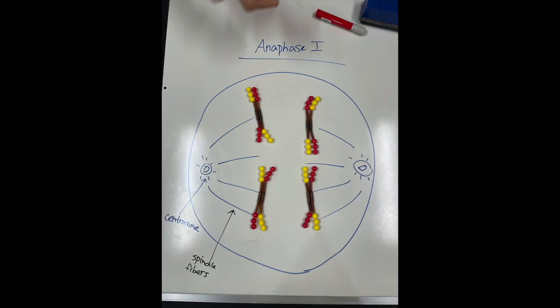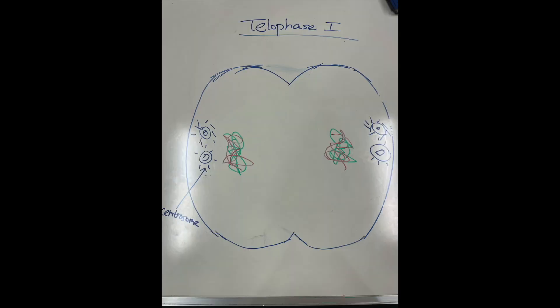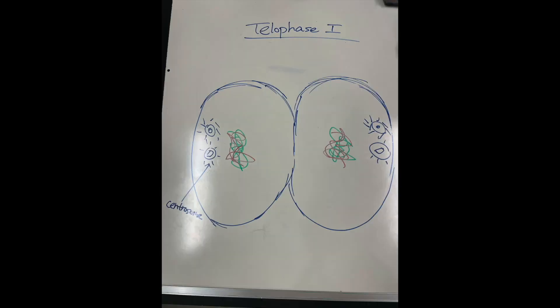Then, in anaphase 1, spindle microtubules pull chromosomes toward the poles of the cell. In this process, homologous chromosomes separate, but sister chromatids remain attached. Then, in telophase 1 and cytokinesis, the cell duplicates.